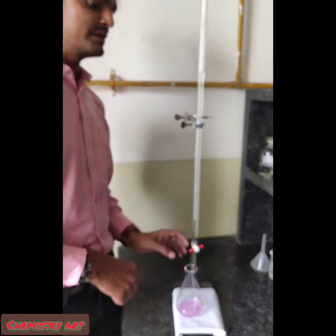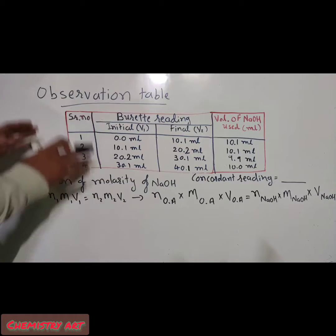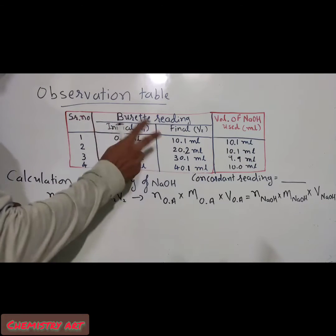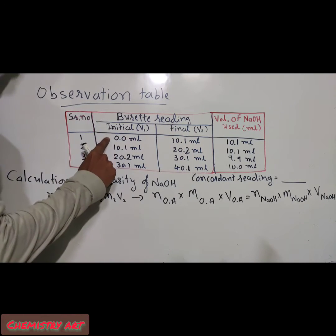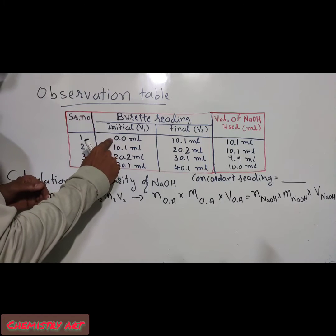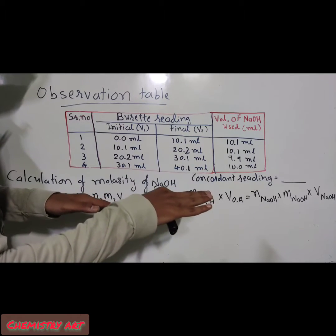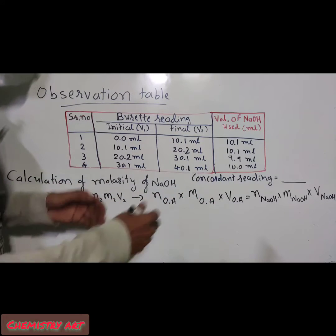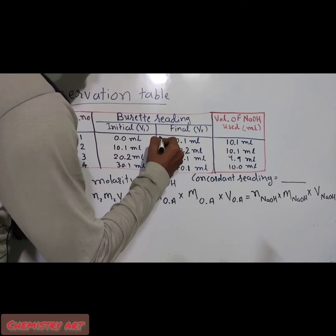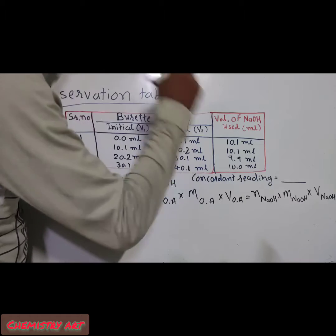After taking all four readings, we will calculate the molarity and strength of the NaOH solution. In the observation table, we note two burette readings: the initial reading at the start of titration — which was 0.0 ml — and the final reading at the endpoint, which is when colorless changes to light pink color.